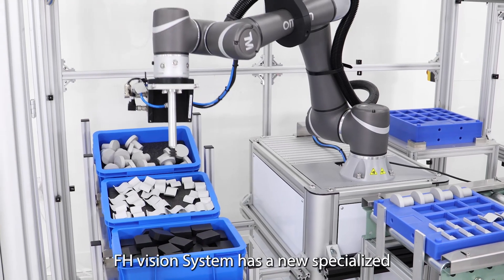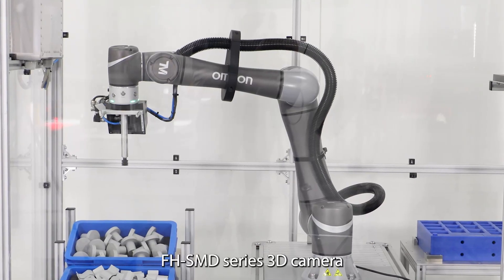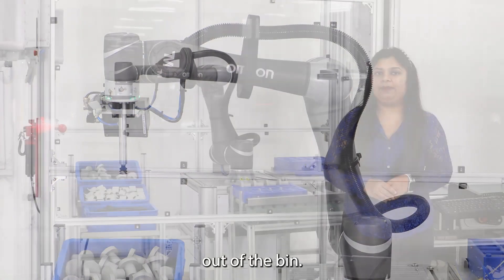Omron's AFH vision system has a new specialized AFH SMD series 3D camera which is able to pick parts out of a bin.